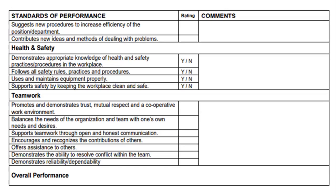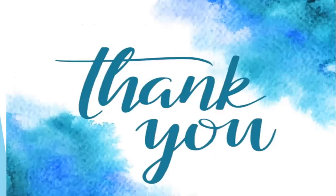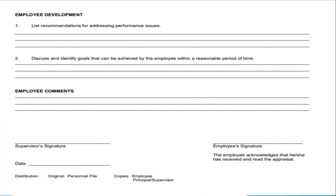The rating scale is one to five. The form includes space for recommendations addressing performance issues, goals that can be achieved by the employee within a reasonable period of time, and signature of the supervisor. A copy is distributed to the personal file and the employee. The principal or supervisor passes this along — that is all about the process of performance evaluation of non-teaching employees.